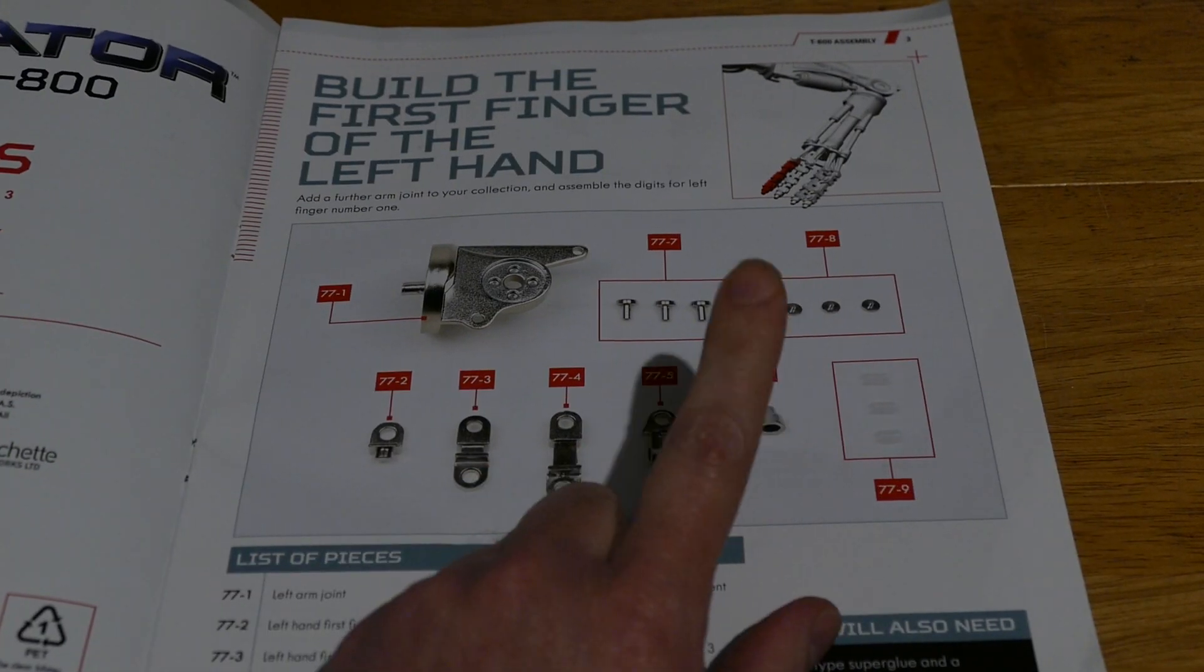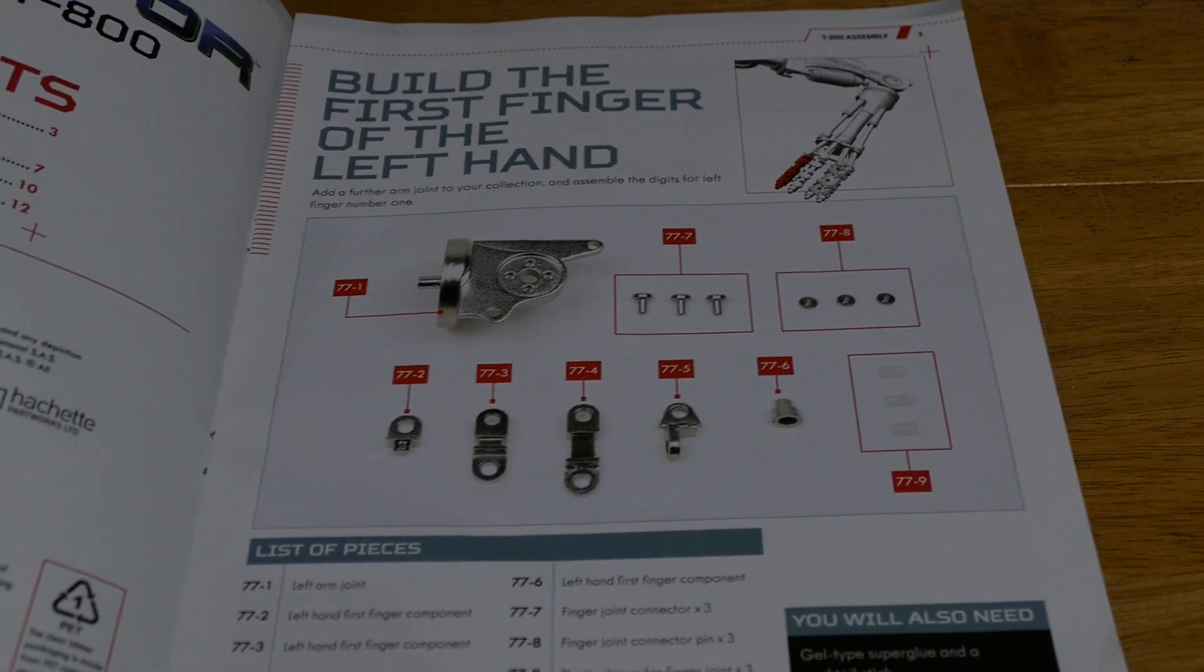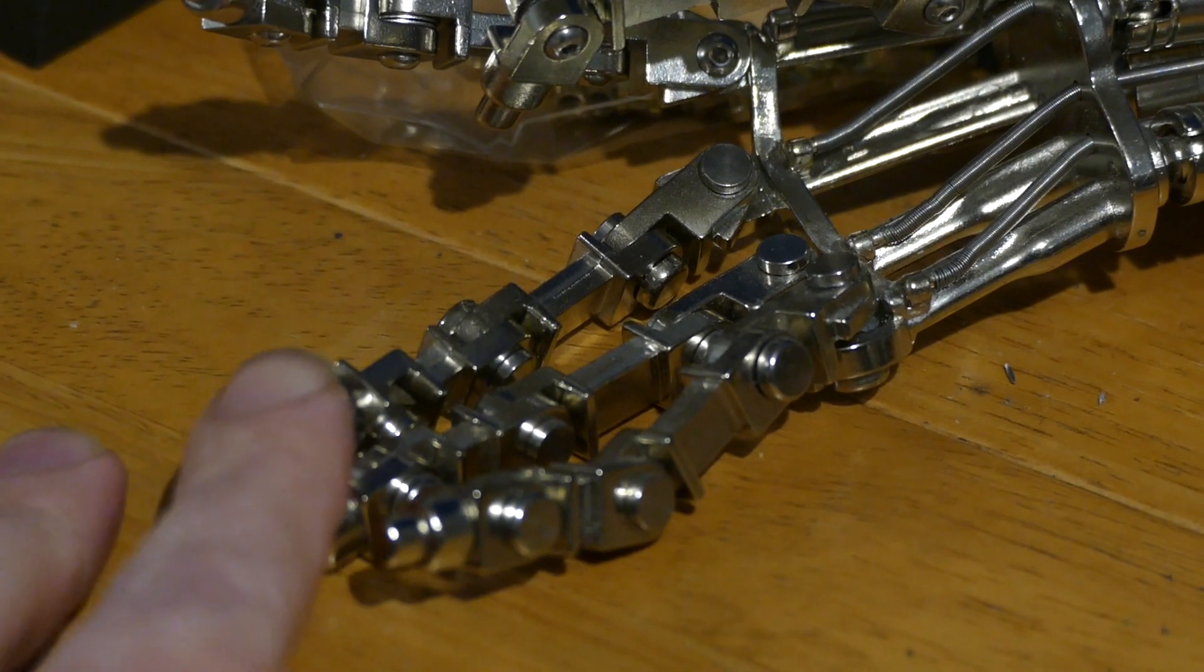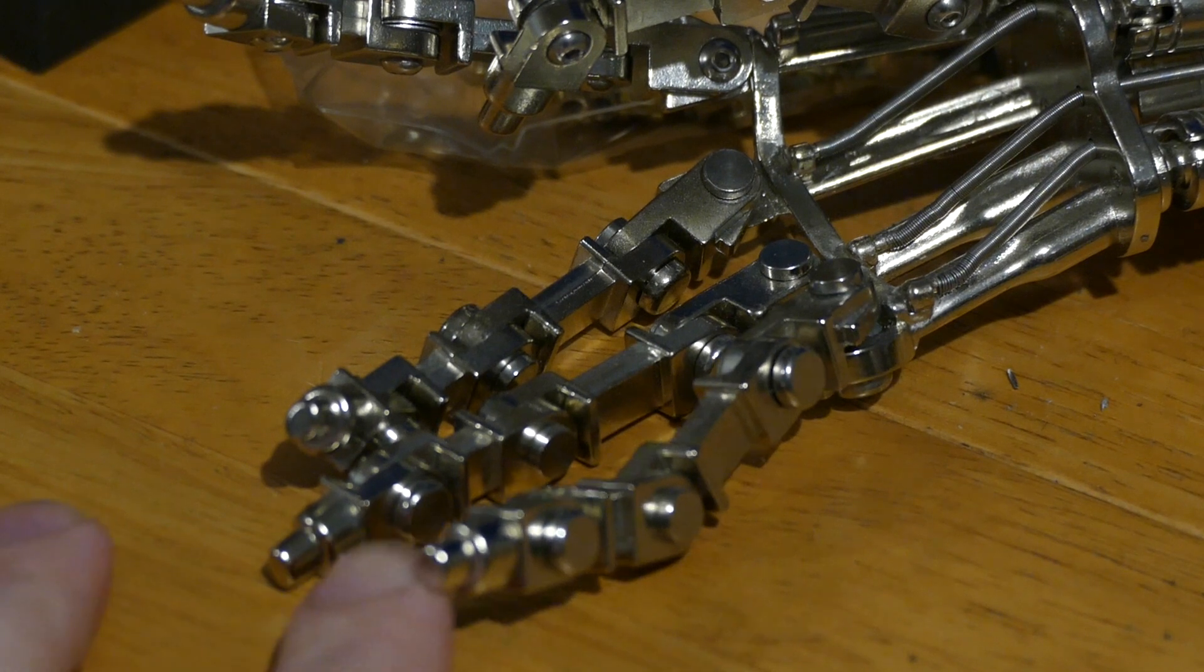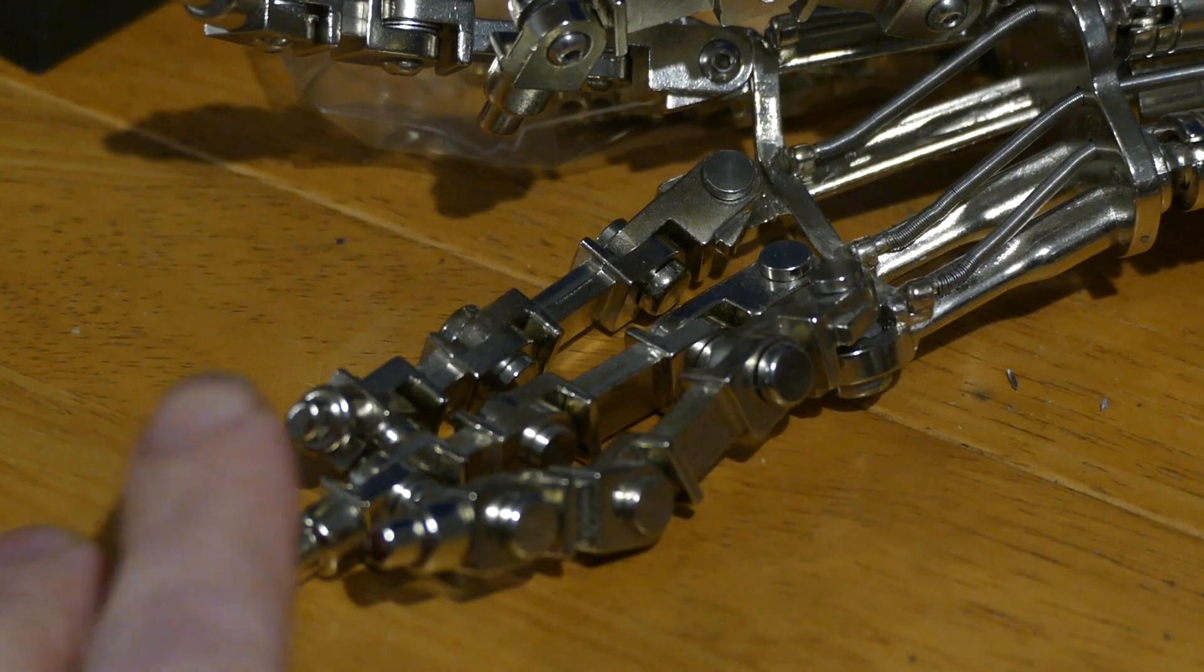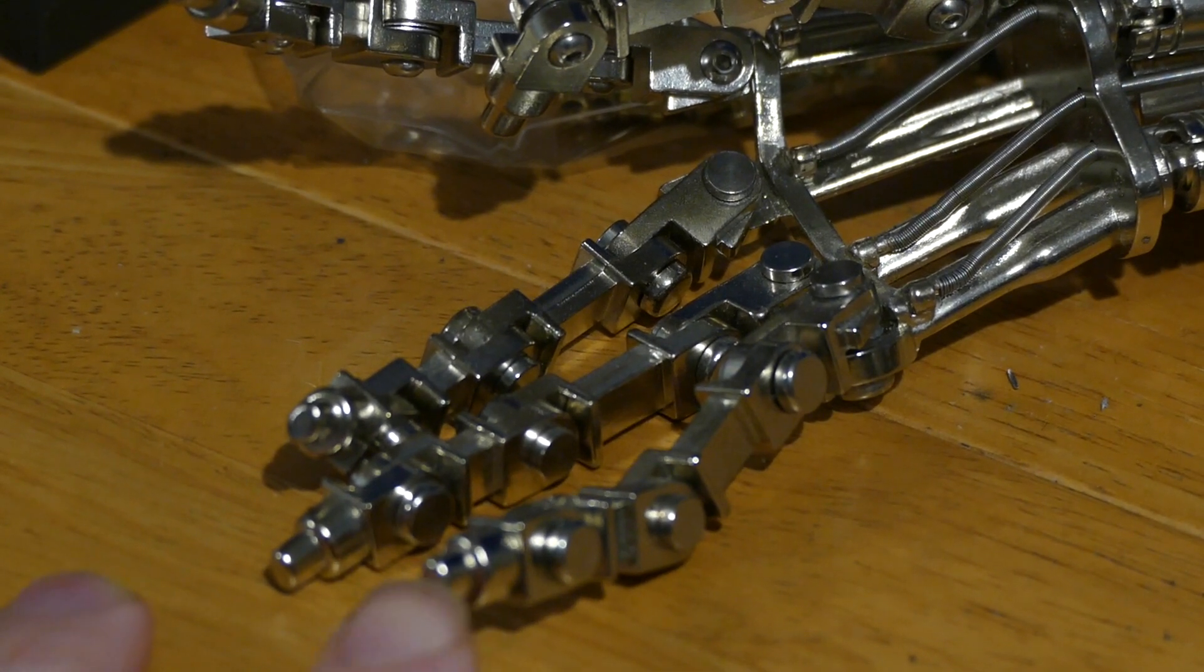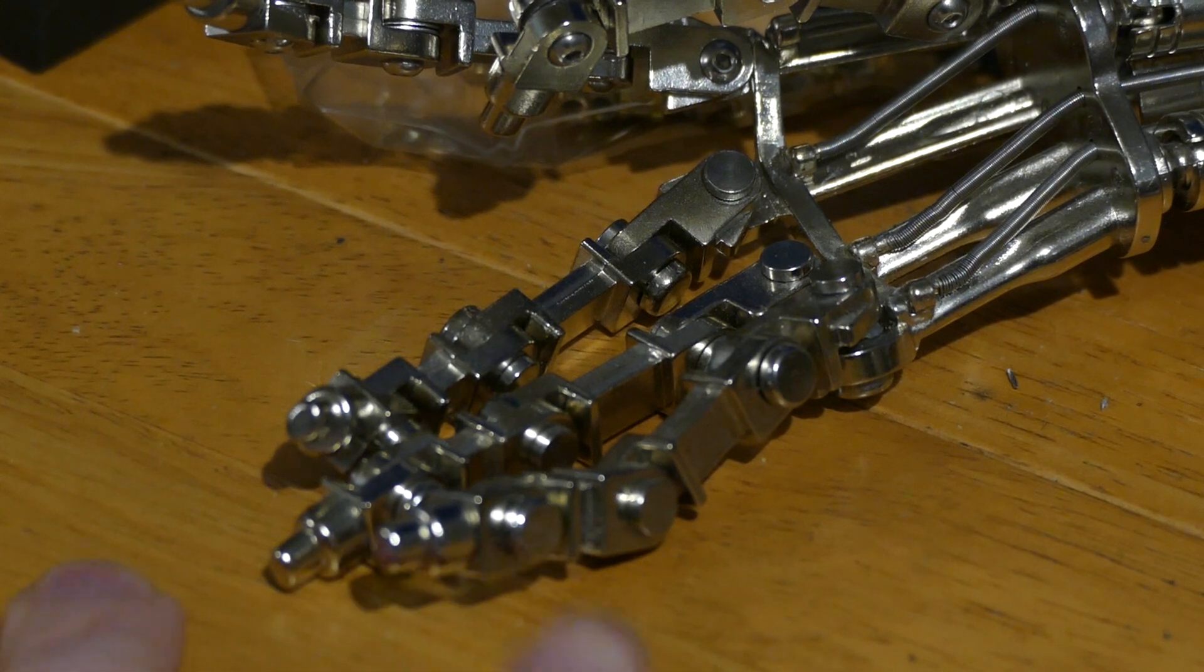So the only piece I will be using is the tip of the finger. I happen to think that even though it's a plastic tip, it blends pretty seamlessly into the metal. I don't think if you weren't told that you would ever know the tips of the fingers are plastic when the rest is metal.